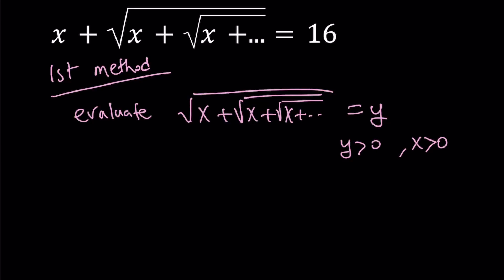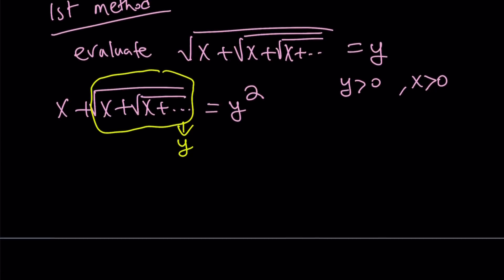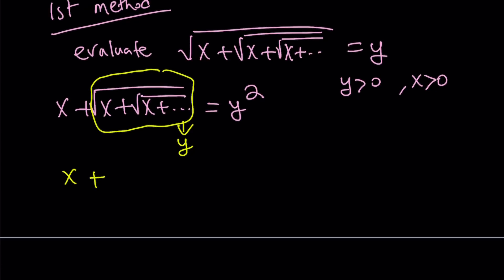Let's square both sides here. That's going to give us x plus the square root of x plus the square root of x plus, so on and so forth, equals y squared. Notice that part of this expression is the same thing as y, this part, so we can set it equal to y. This gives us an interesting equation in two variables: x plus y equals y squared.